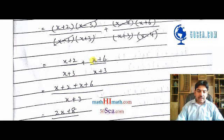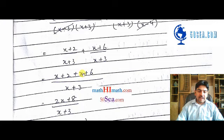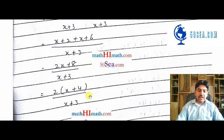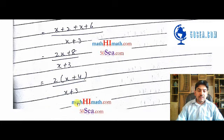Here we have x plus 2 over x plus 3, and here we have x plus 6 over x plus 3. Because x plus 3 is the LCM and both are the same, the numerators combine: x plus 2 and x plus 6, giving 2x and 8, over x plus 3. To simplify, 2 is common from 2x and 8, so the final answer is 2 times x plus 4, over x plus 3. This question is now complete.